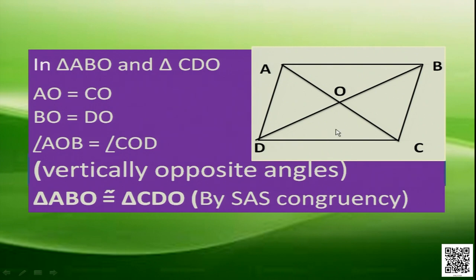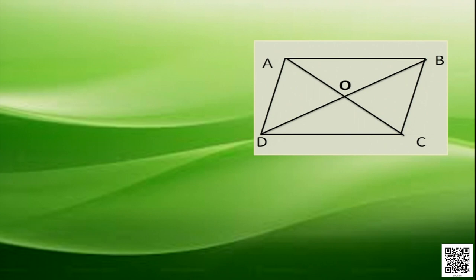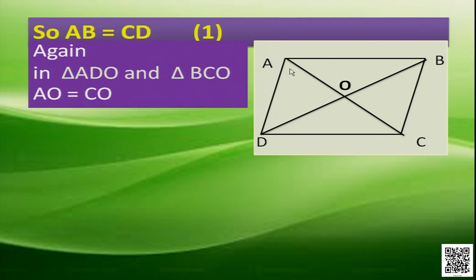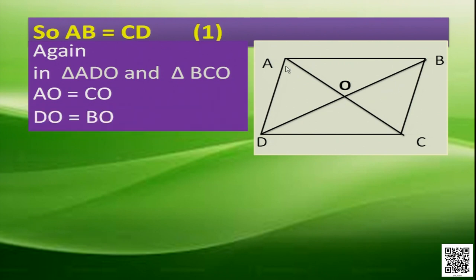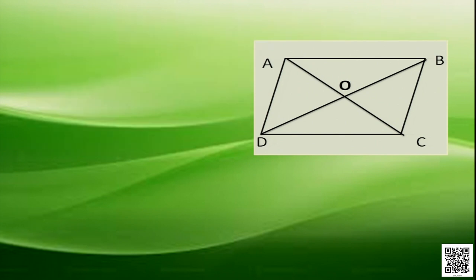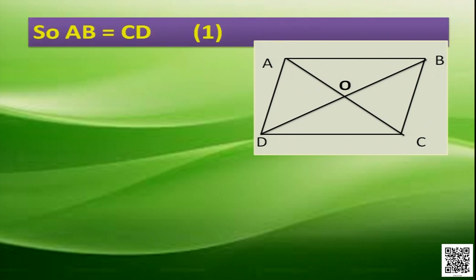As these two are congruent, we can say that AB is equal to CD as the corresponding parts of the congruent triangles. Again, if we take triangles ADO and BCO, we have AO equal to CO, BO equal to DO, and angle AOD equal to angle BOC as vertically opposite angles.